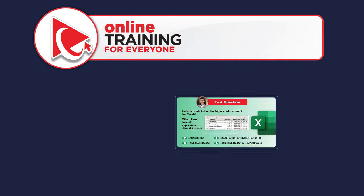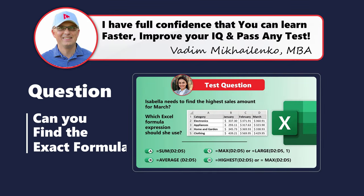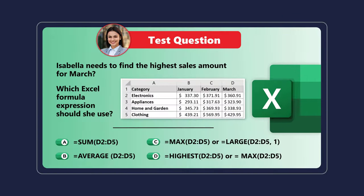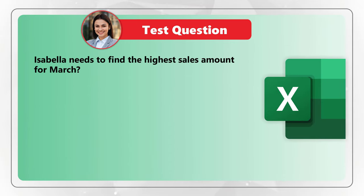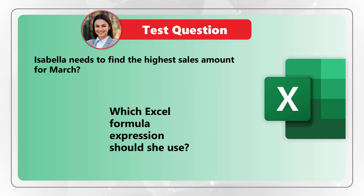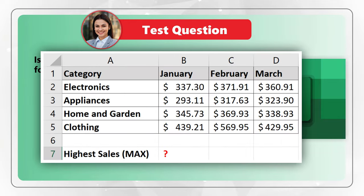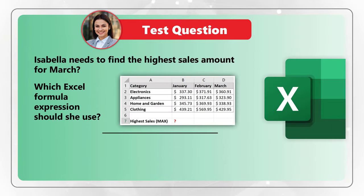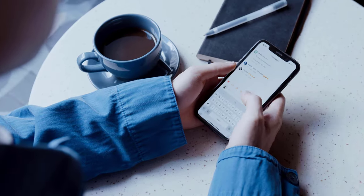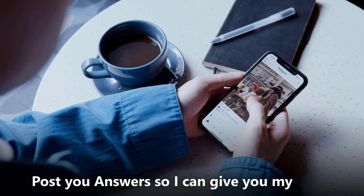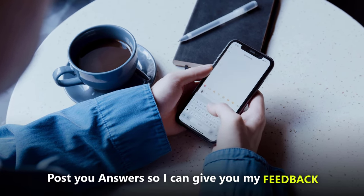I have a surprise challenge for you. I'm going to give you a practice question and ask you to solve it on your own and post the answer in comments. Isabella needs to find the highest sales amount for March. Which Excel formula expression should she use? You are presented with the dataset and four possible choices: A, B, C, and D. Take a close look to see if you can come up with the solution, and once ready, post your answer and solution in comments so I can give you my feedback. Good luck!